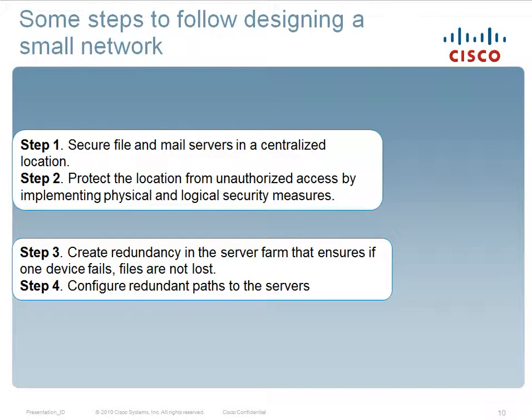Some steps to follow while designing a small network: Step 1 — secure file and mail servers in a centralized location. Step 2 — protect the location from unauthorized access by implementing physical and logical security measures. Step 3 — create redundancy in the server farm to ensure that if one device fails, files are not lost. Step 4 — configure redundant paths to the servers.